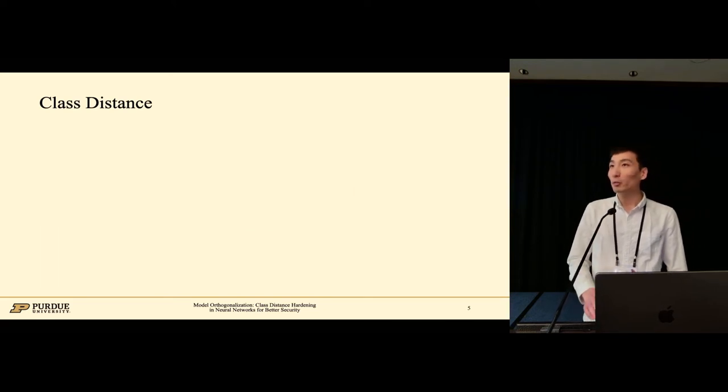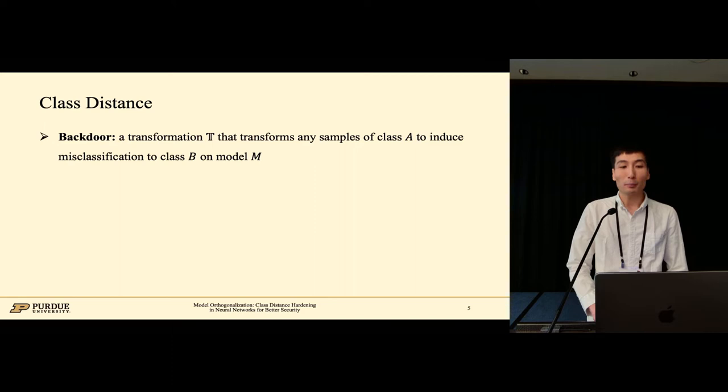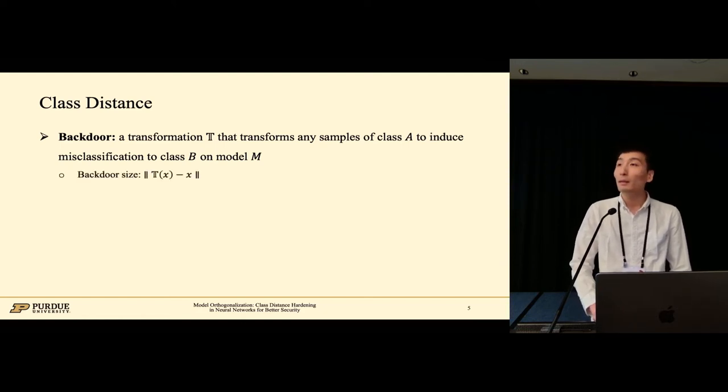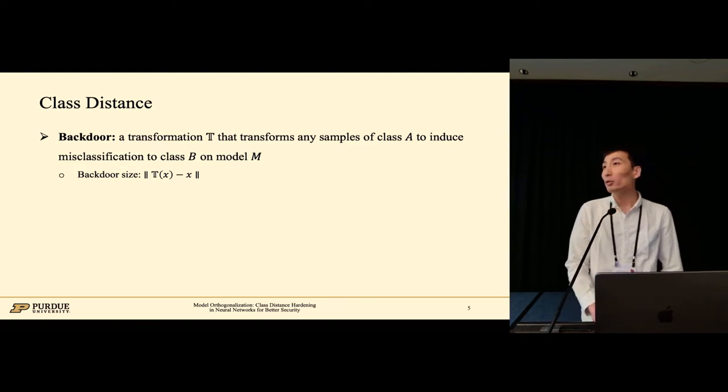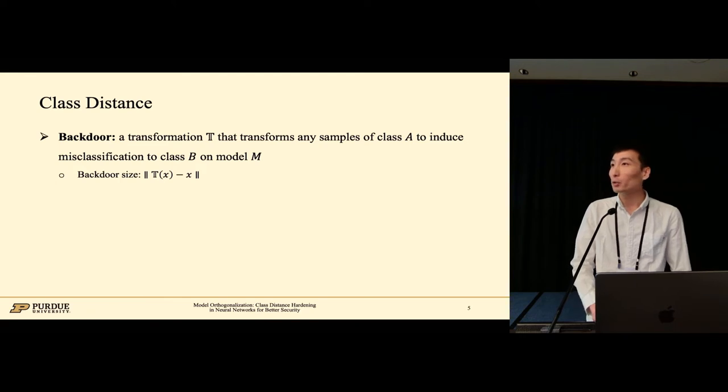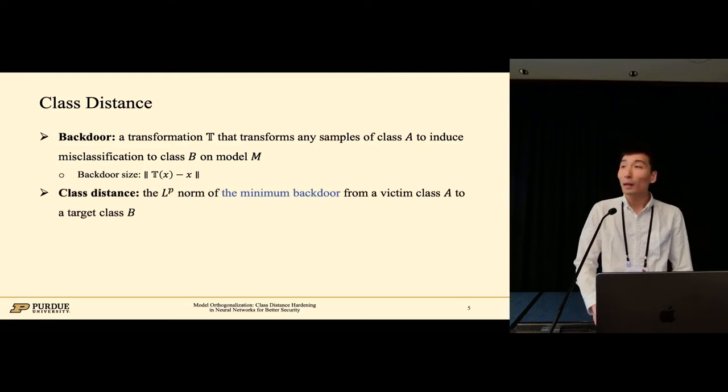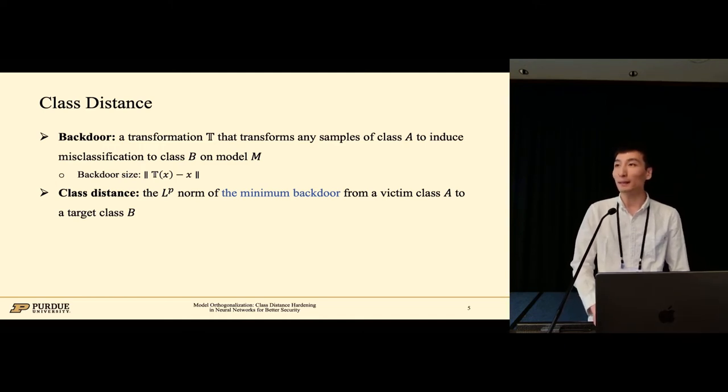Before we go into details about how to harden a model, let's first define a few notions. A backdoor is a transformation that adds a trigger on the input of class A. The transformed input will cause misclassification to a class B on model M. The backdoor size is the LP norm of the change on the input. Backdoors are usually small and stealthy, which can expose the characteristics between a pair of classes. We define the LP norm of the minimum backdoor from a victim class A to a target class B as their class distance.